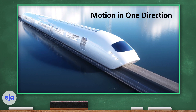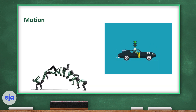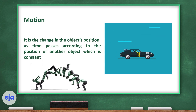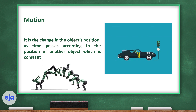Dear students, welcome to our science episodes. Today in episode 1 we are going to talk about motion in one direction. Motion is the change in the object position as time passes, according to the position of another object which is constant.